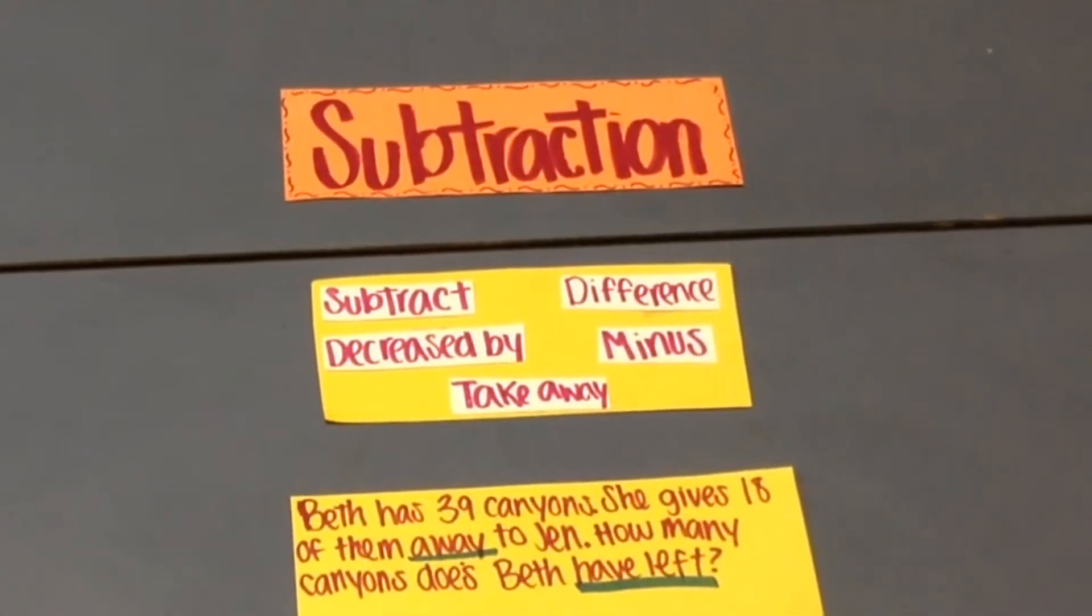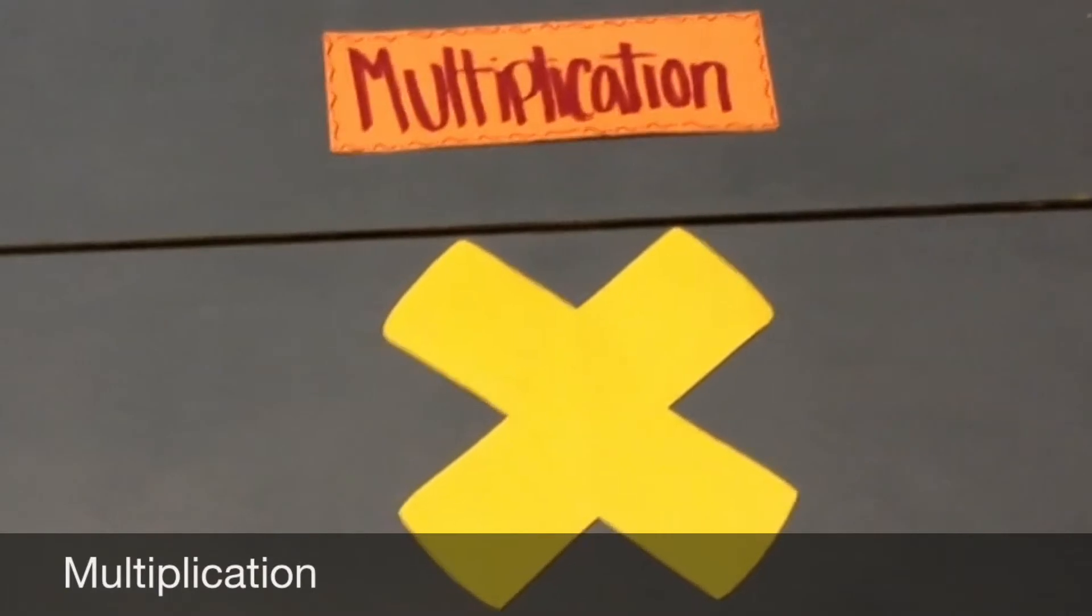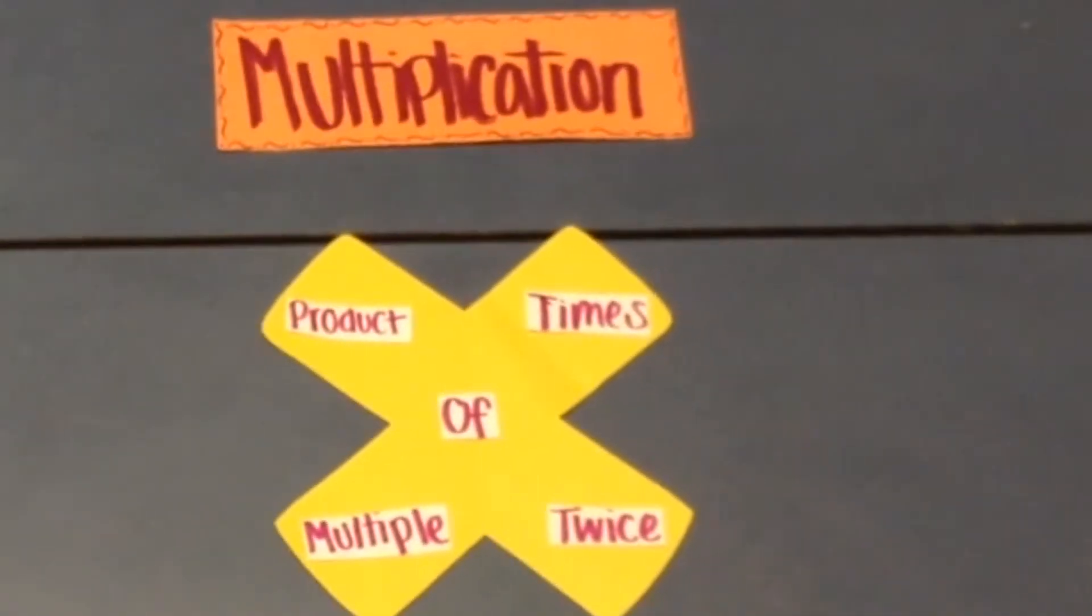Multiplication. That, in the yellow, is the symbol of multiplication. The keywords are product, times, of, multiple, and twice.